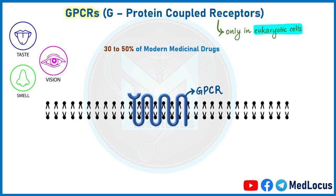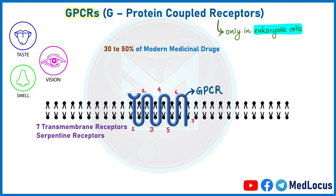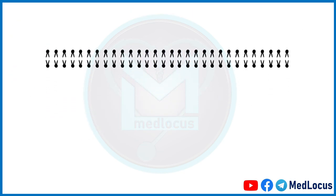GPCRs play a crucial role — for example, serotonin and dopamine produce their effects by binding to GPCRs. GPCRs are transmembrane proteins made up of a single polypeptide chain which crosses the plasma membrane seven times. So they are also called seven-transmembrane receptors or serpentine receptors, because they coil snake-like around the membrane.